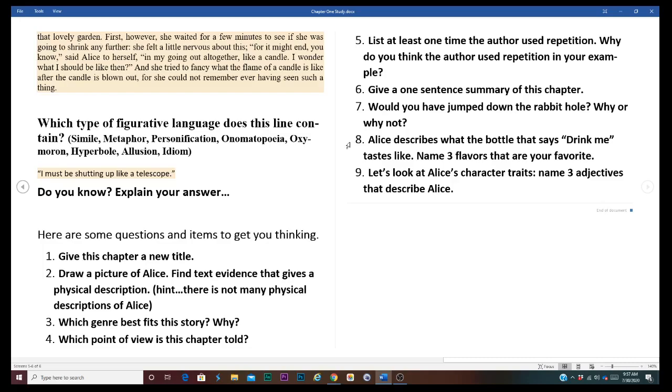Number eight, Alice describes what the bottle that says drink me tastes like. Remember she named off like six things. It was like turkey and buttery toast. All kinds of stuff. Name three flavors that are your favorite.